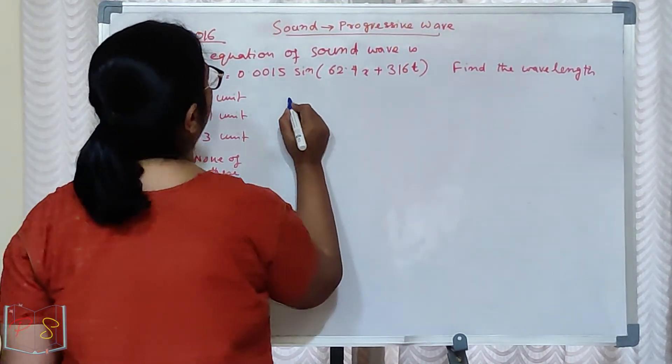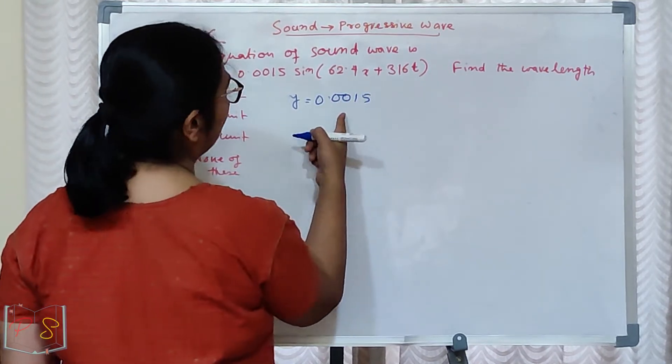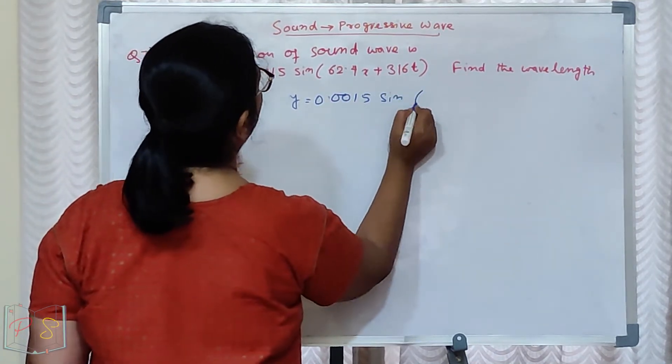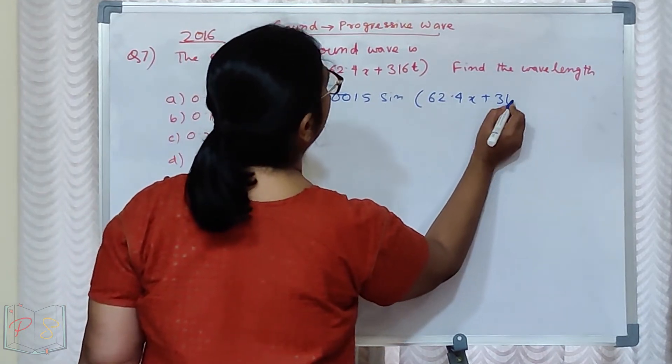Find the wavelength. Easy. Y equal to 0.0015. This information we don't need. 62.4x plus 316t.